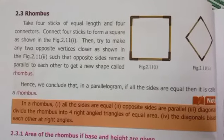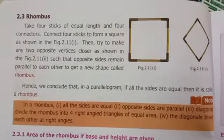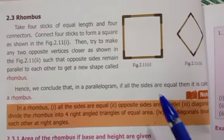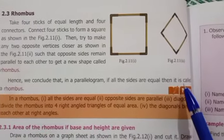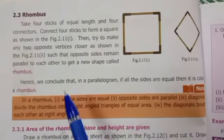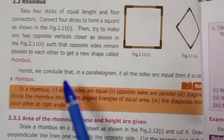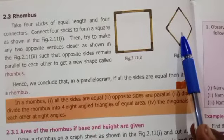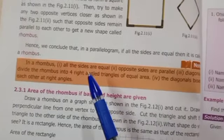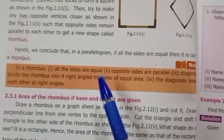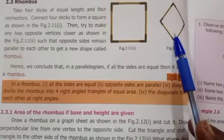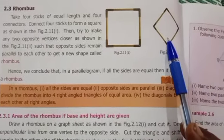The topic is rhombus. Rhombus means in a parallelogram if all the sides are equal then it is called a rhombus. This is the rhombus diagram. Property of rhombus: all the sides are equal.